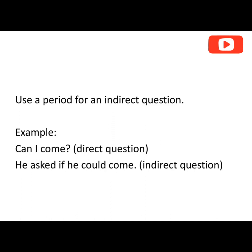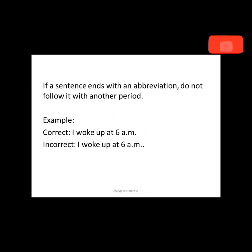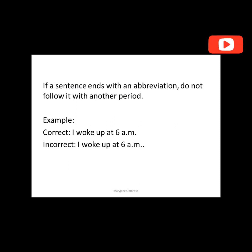If a sentence ends with an abbreviation, do not follow it with another period. Example: 'I woke up at 6 a.m.' Notice that there is already a period at the end of the abbreviation, so there is no need to add another period. Adding a second period, like 'I woke up at 6 am.' would be incorrect. Once there is already a period marking an abbreviation at the end of a sentence, no need to add another period.